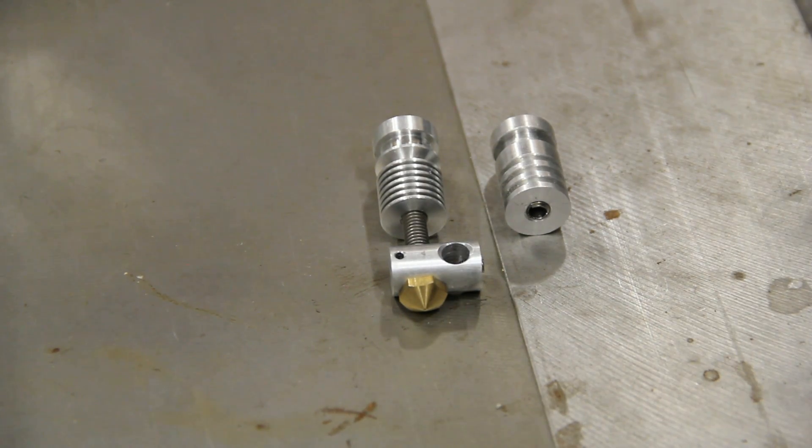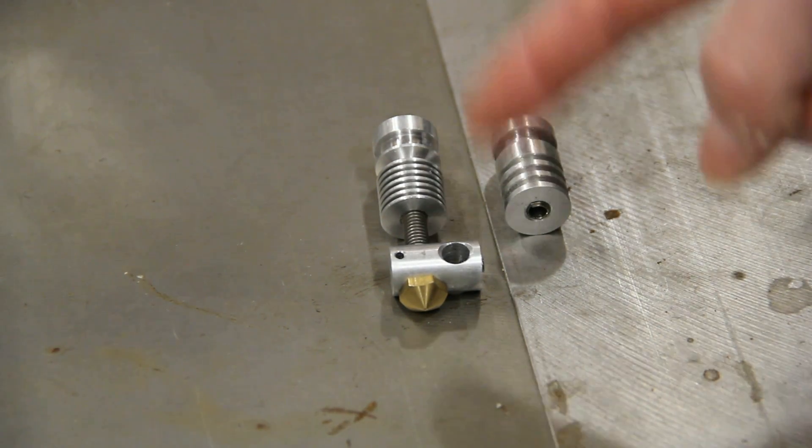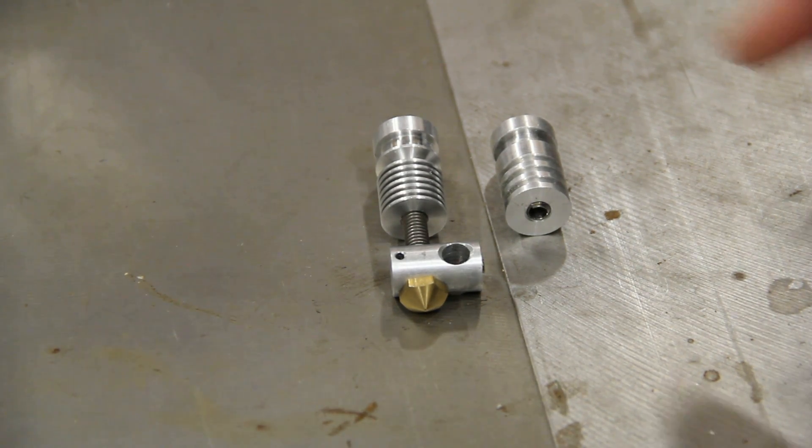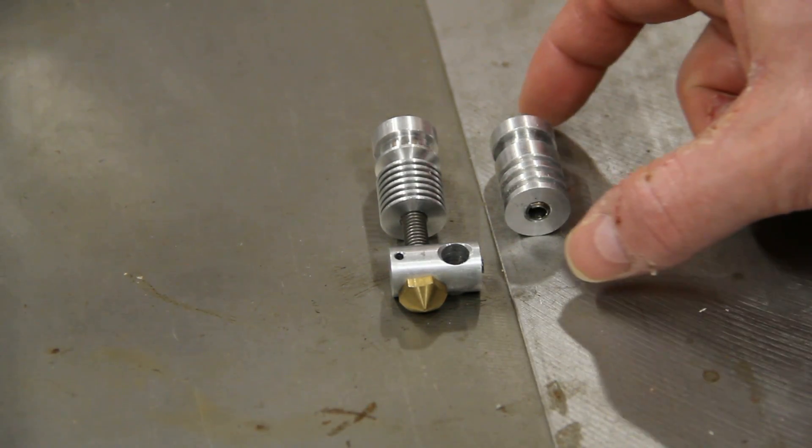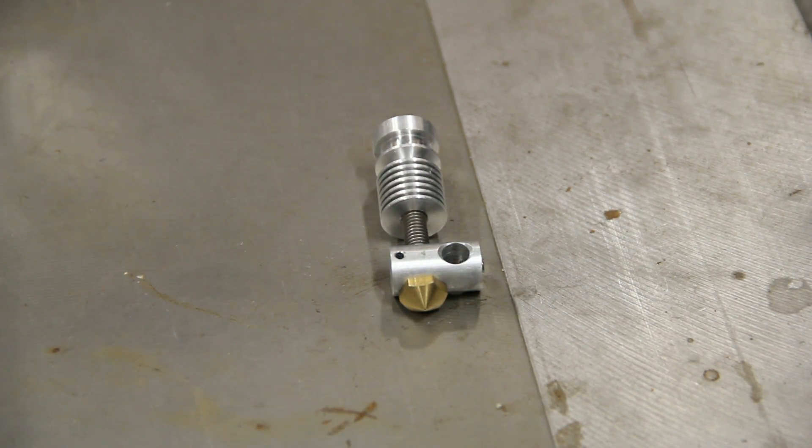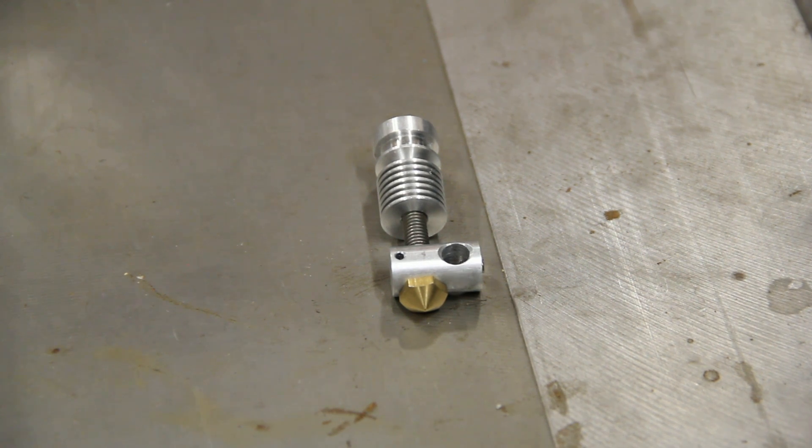So what that does of course is create more surface area for cooling. So I think this is actually going to be a more efficient heatsink design as far as keeping the top part of the hotend cool which is what you want. Other than that, it looks like this is a nice evolution of the Alu hotend design.